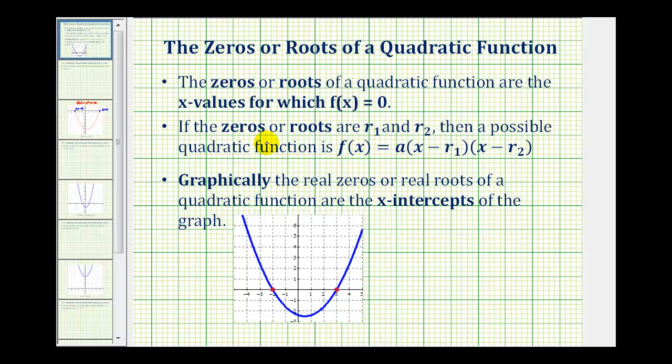So for example, if the zeros or roots are r sub one and r sub two, then a possible quadratic function would be f(x) equals some constant a times a factor of x minus r sub one, where r sub one is one of the zeros, times a factor of x minus r sub two, where r sub two is a zero.